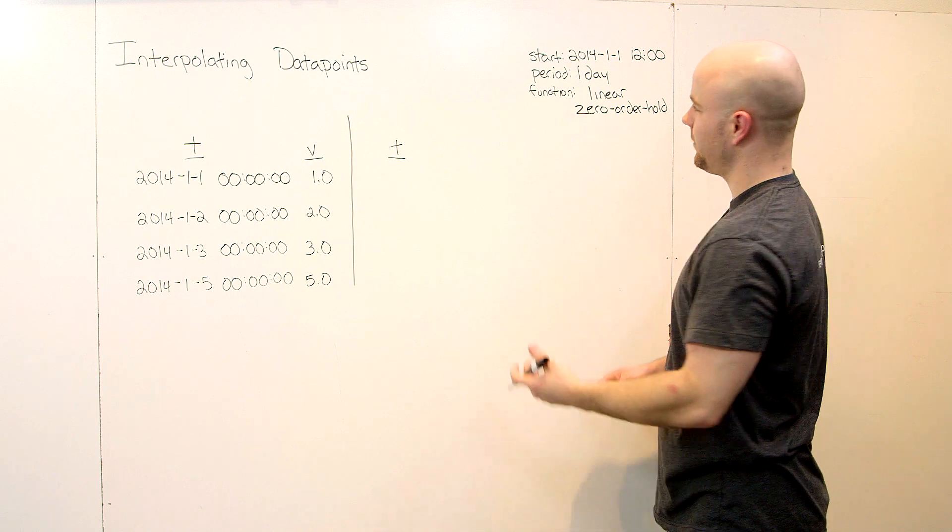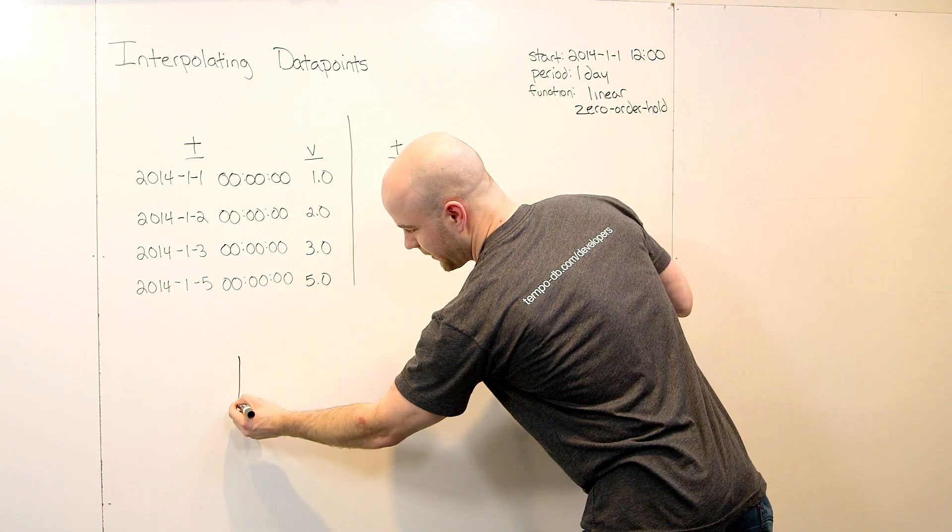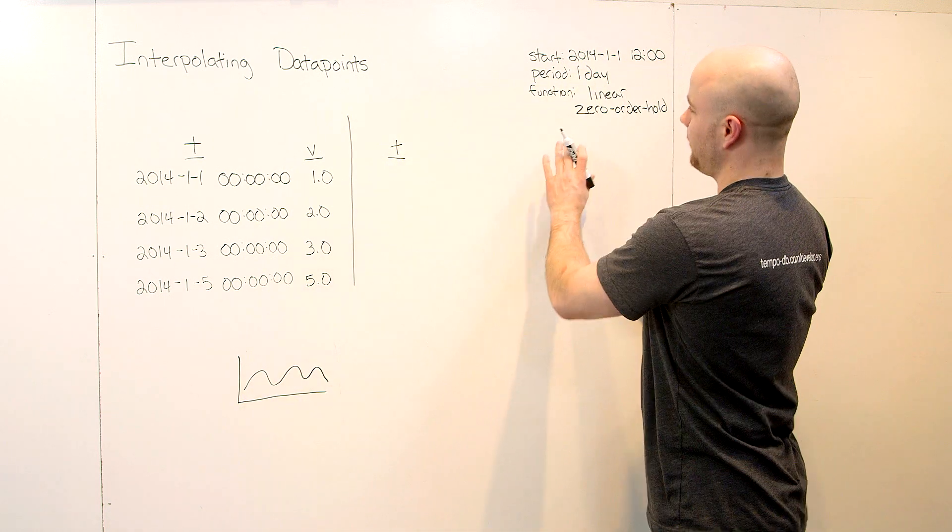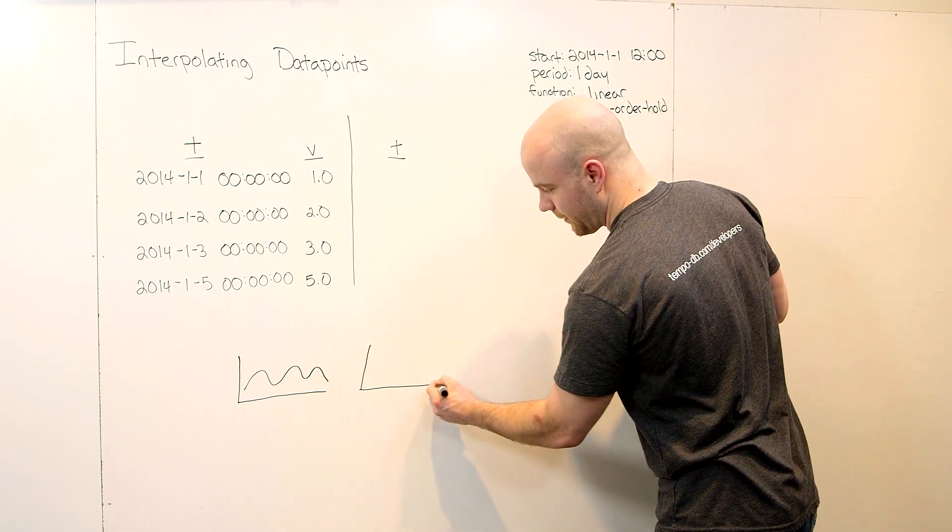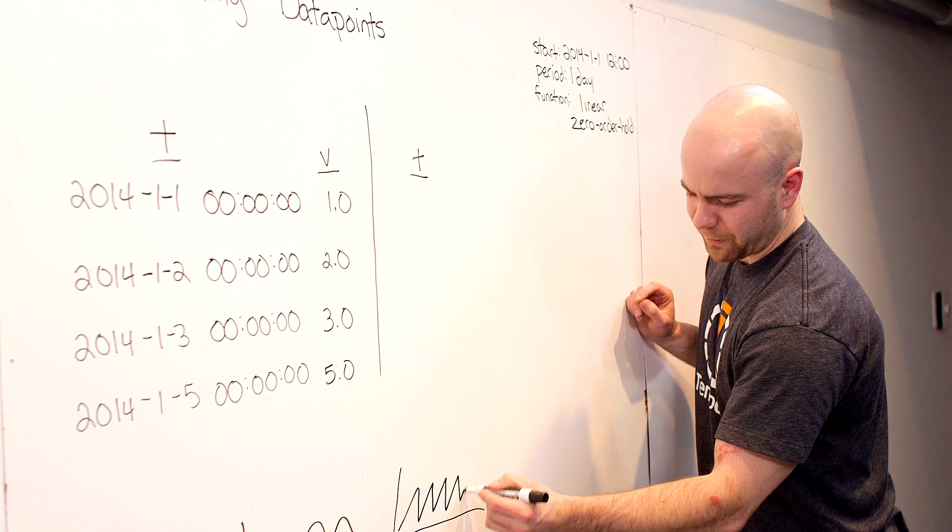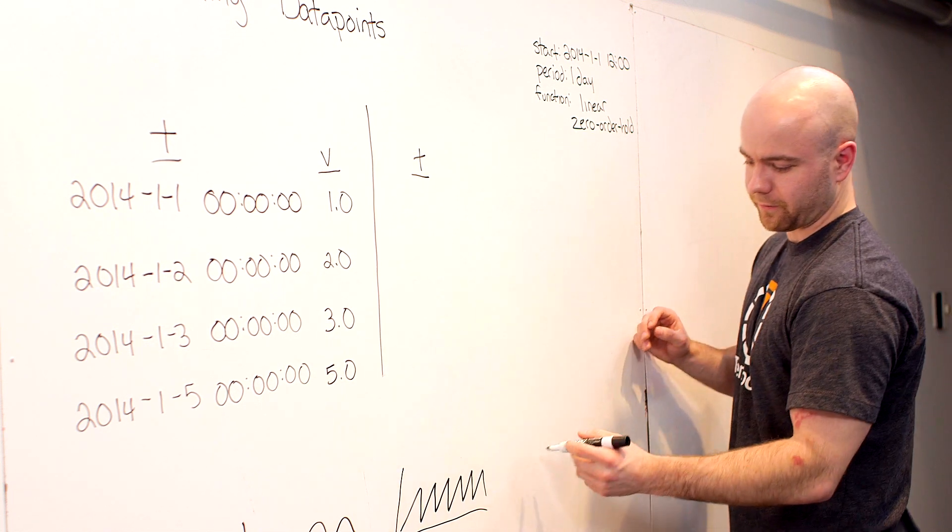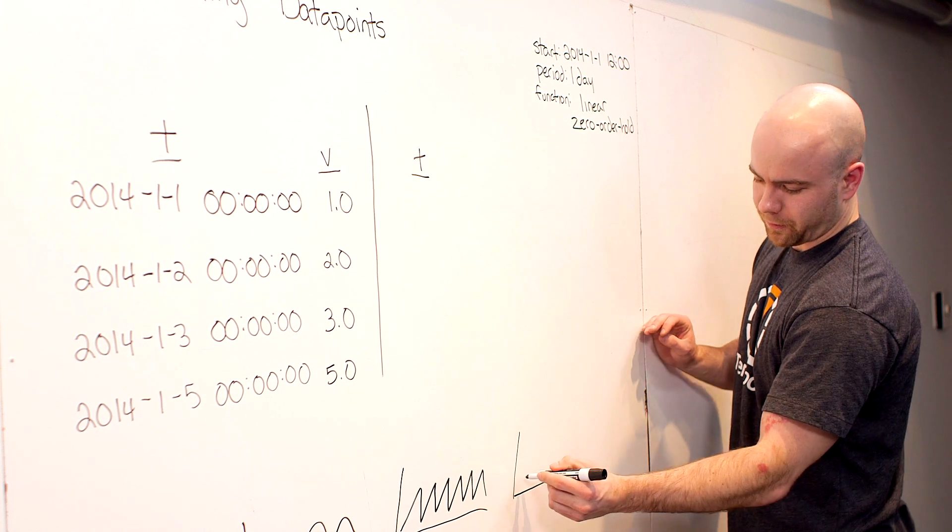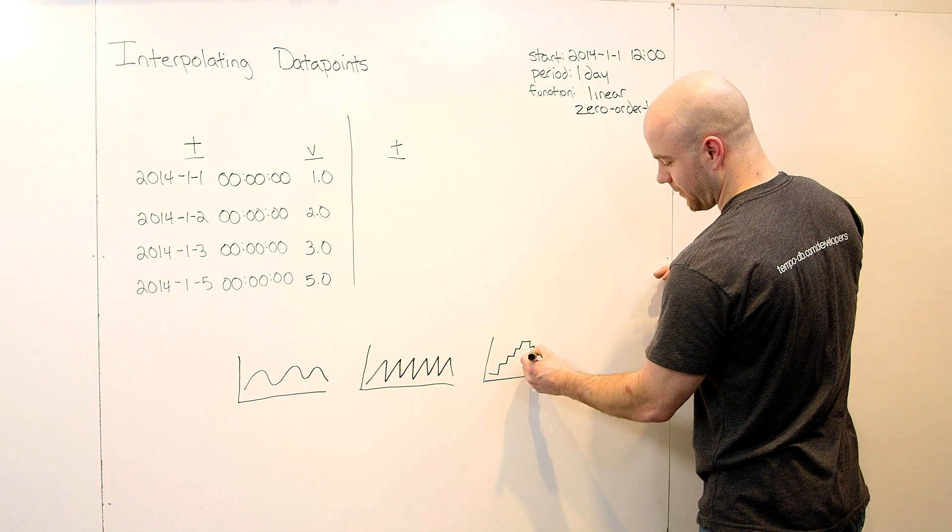To give you a high-level visualization of how these things work with your data, let's start with an example that looks like a sine wave. If we apply a linear interpolation to a sine wave, what we end up with is something that looks like a sawtooth or mountains. That's because in linear interpolation, we can only use straight lines. There are no curves. For zero order hold, it would look more like steps or pyramids because we're holding the previous value over until we get a new one.